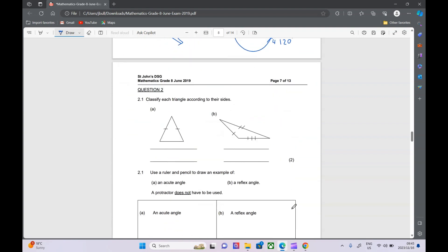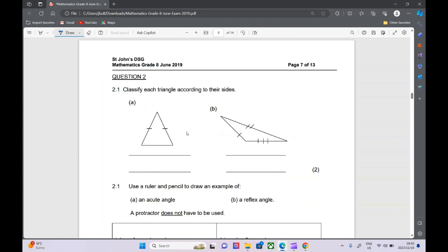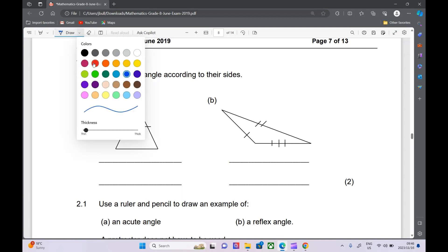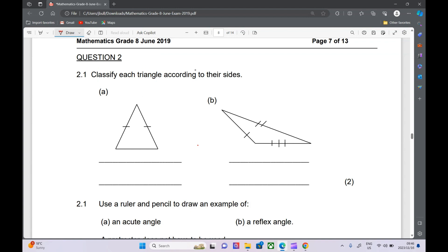If we look at the next one, classify each triangle according to their sides. These are triangle words that we have to know. So first of all, this first triangle, all we know is that this side is equal to this side. If we know that two sides are equal like this, it is called an isosceles triangle. So this would be where they're also checking your spelling. This is an isosceles triangle.